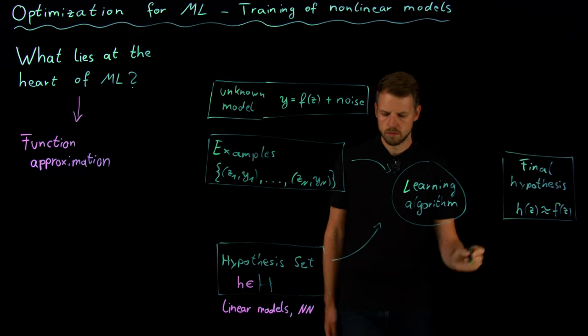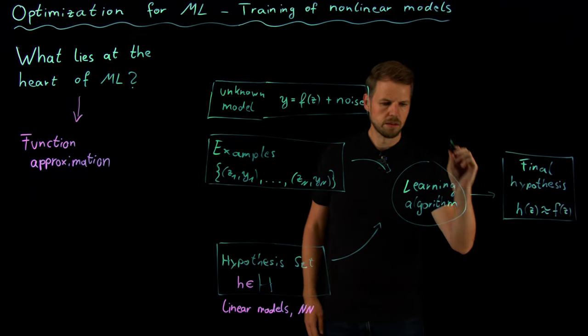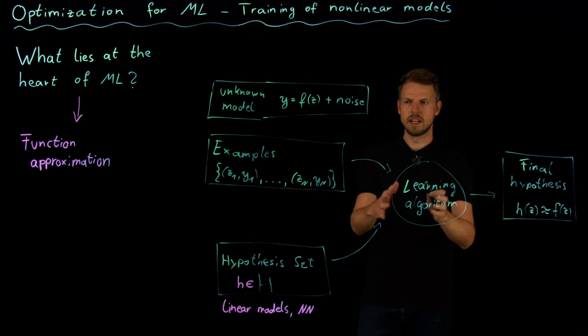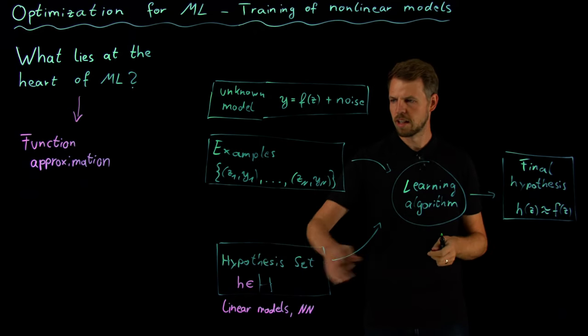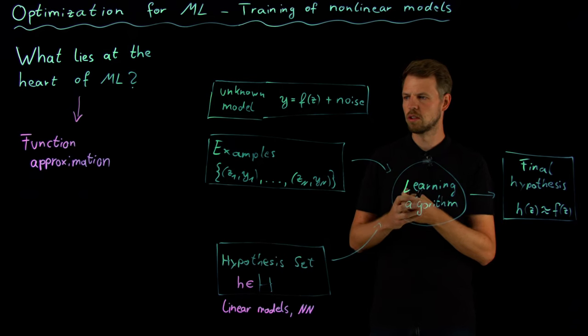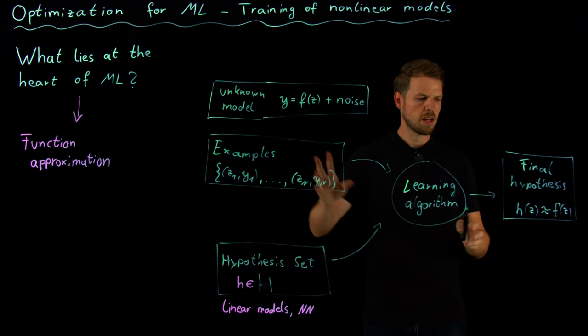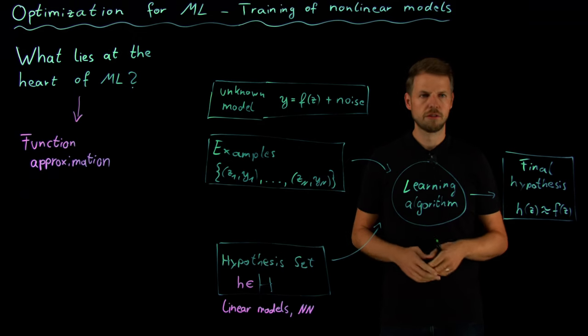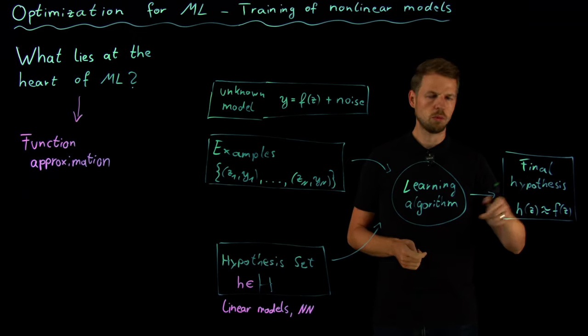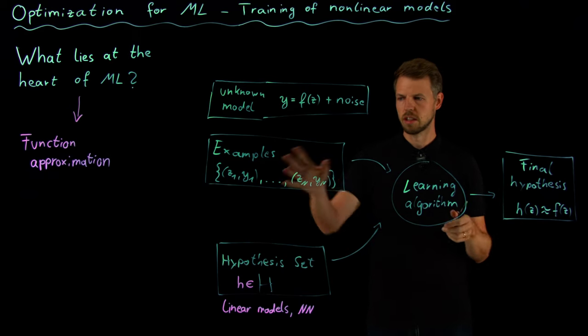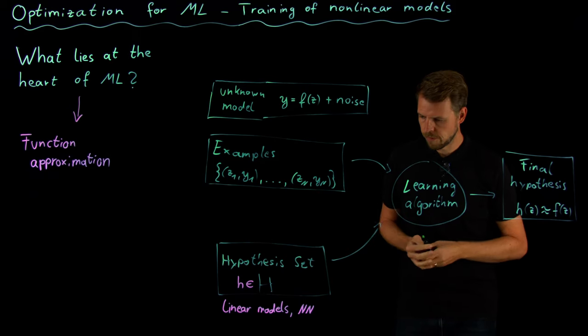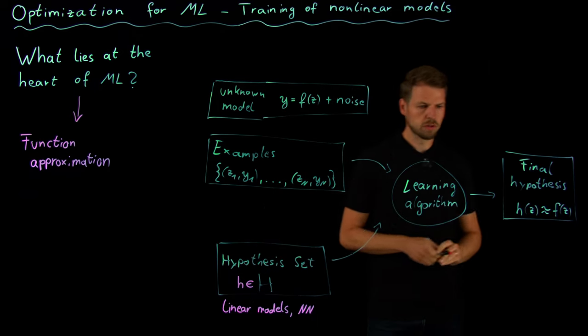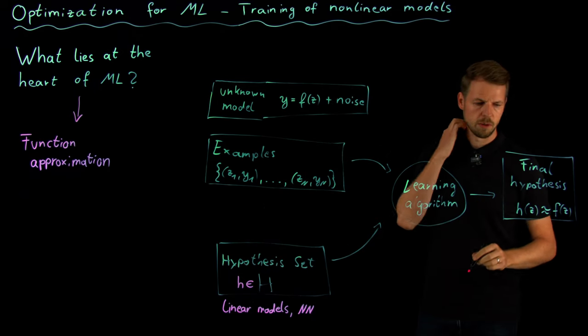The learning algorithm takes our model class that we are trying to use to approximate our system, it takes the examples, and then out of all the possible hypotheses creates the one that fits best our true model. Given the data, it does a good job. So there are a few questions now: first of all, what is the learning algorithm about? And then how do we even determine what is a good model?